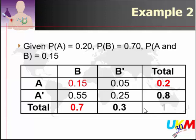In the non-mutually exclusive example: given P(A) = 0.2, P(B) = 0.7, and the overlap P(A and B) = 0.15. So A only = 0.2 − 0.15 = 0.05; B only = 0.7 − 0.15 = 0.55. We know the total must be 1, so the complement of B is 0.3, and the complement of A is 0.8. This is a very simple concept — the sum of all probabilities is 1.